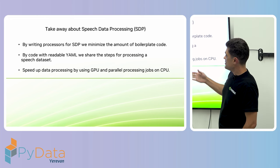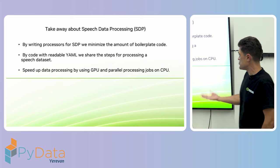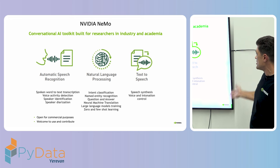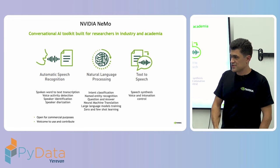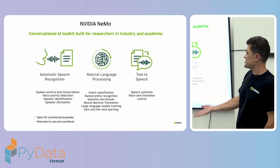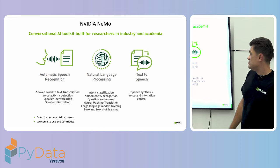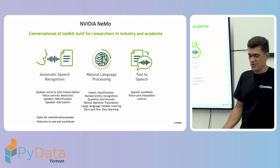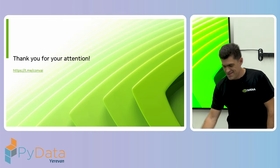By using a readable YAML config we share the processing steps for speech datasets. By using GPU support or CPU-parallelized jobs we can speed up processing. This is part of the larger NeMo project which includes large language models, automatic speech recognition, and other components. It is open for commercial purposes, and you as developers are welcome to contribute if you find bugs or want new features. Thank you for your time.